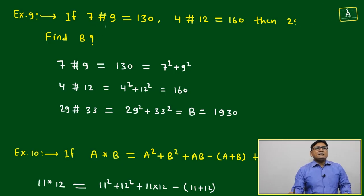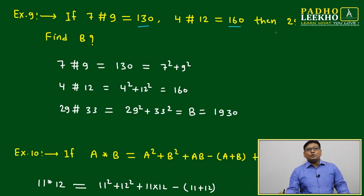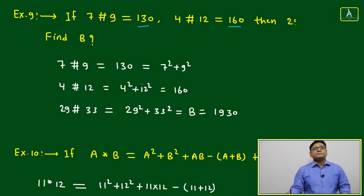Next question. If 7 # 9 = 130 and 4 # 12 = 160, then find 8. What we'll do?